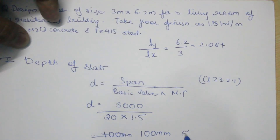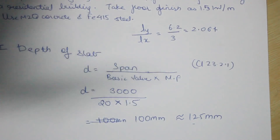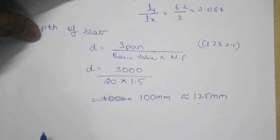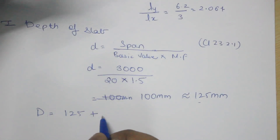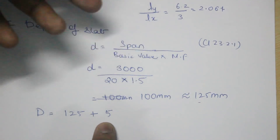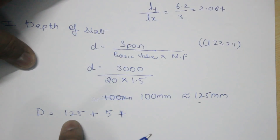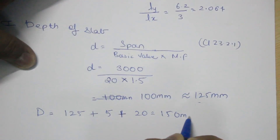We assume an effective depth greater than 100 mm, say 125 mm. Using a 10 mm bar and a clear cover of 15 mm (rounding up to 20 mm), the total depth equals the effective depth plus half the bar diameter (5 mm) plus clear cover: 125 + 5 + 20 = 150 mm. So our total depth is 150 mm.